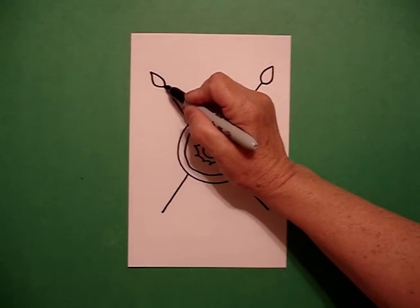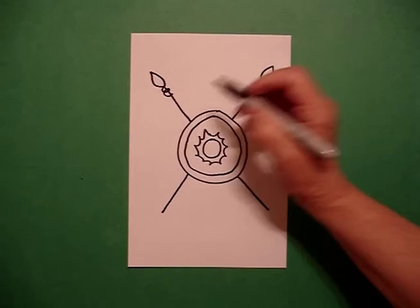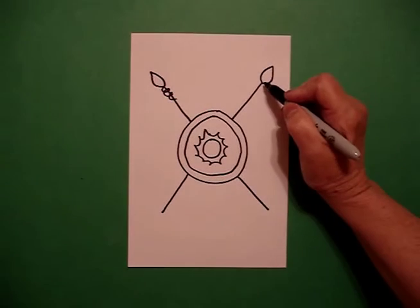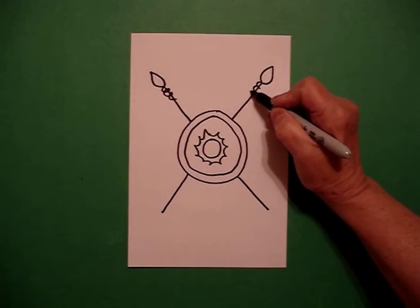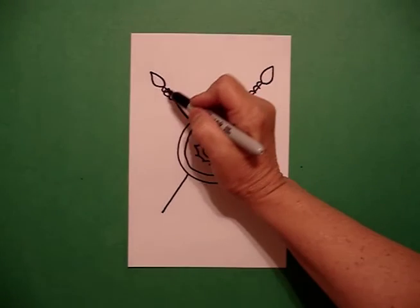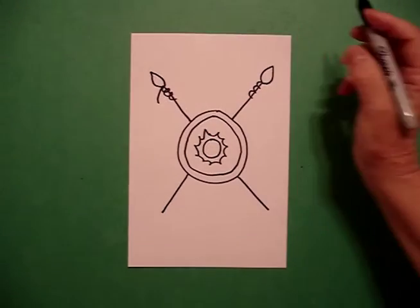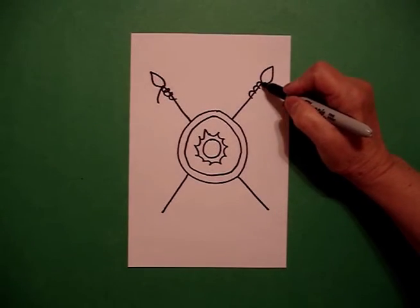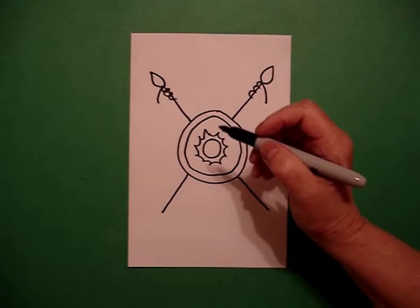Right at the base, I'm going to go loop, de-loop, de-loop. And on the right, loop, de-loop, de-loop. And now I'm going to draw a straight line out, or slightly curved. On the left, slightly curved on the right.